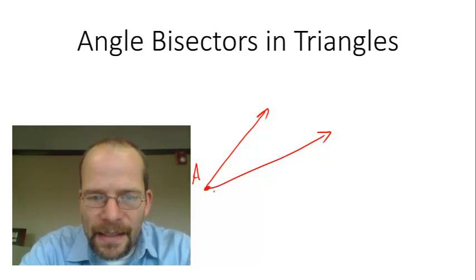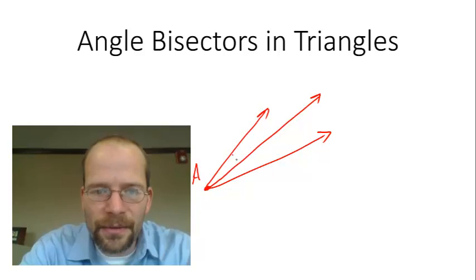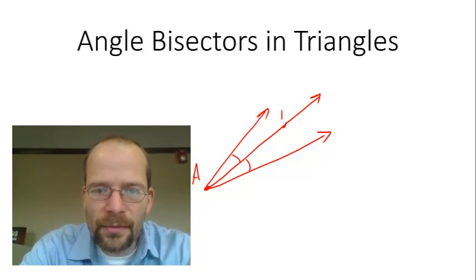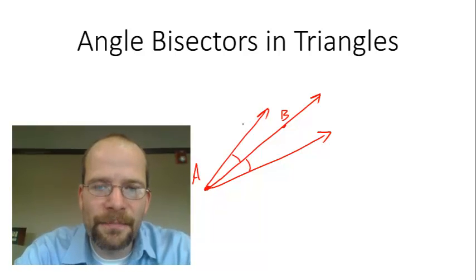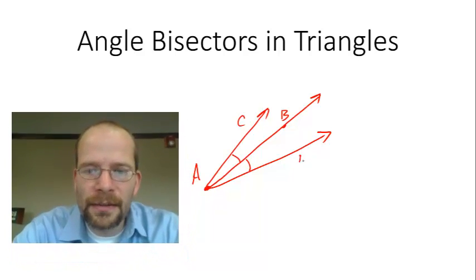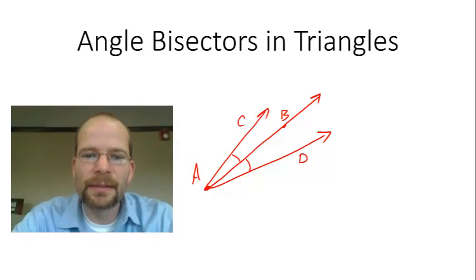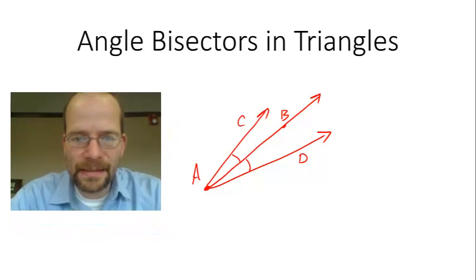The bisector is the ray that divides the angle into two congruent angles. So in this case, ray AB would be called the bisector of angle CAD. So that's what a bisector is.